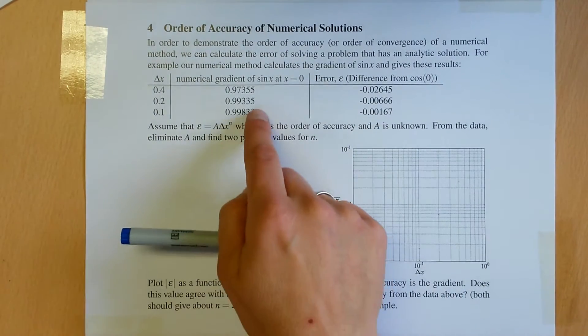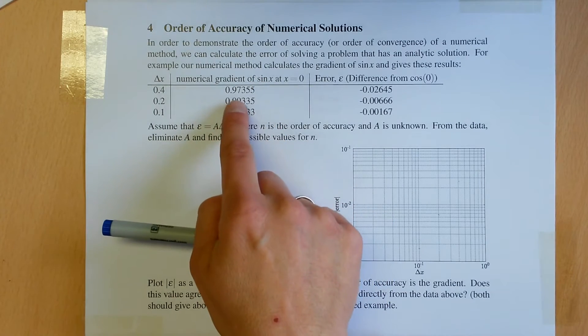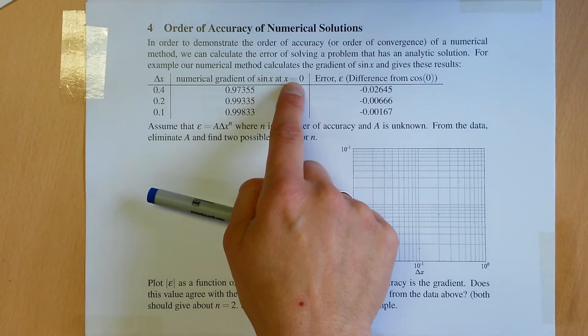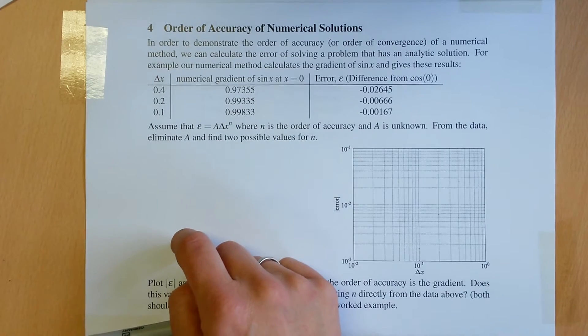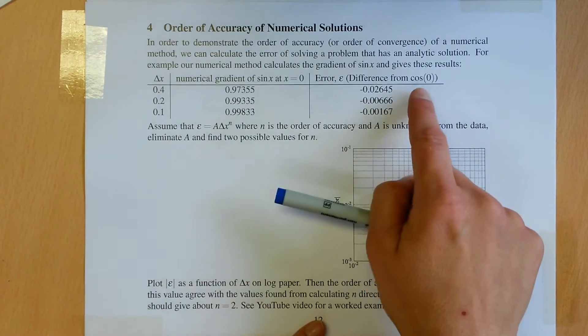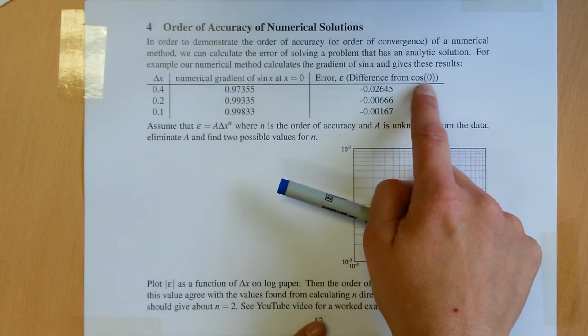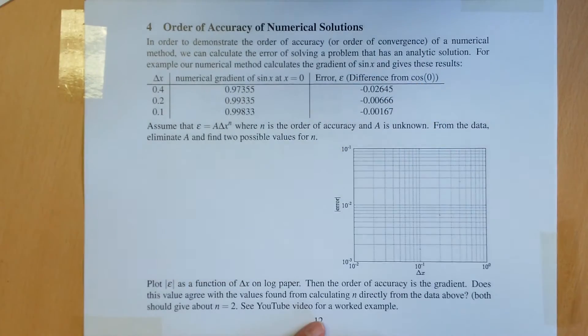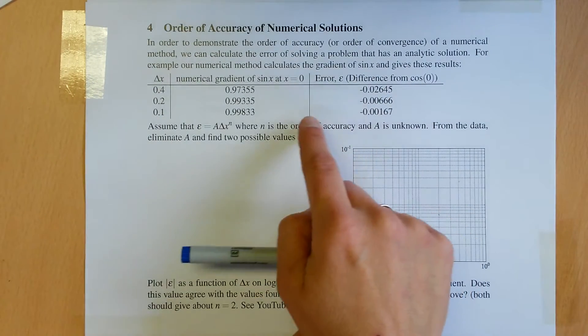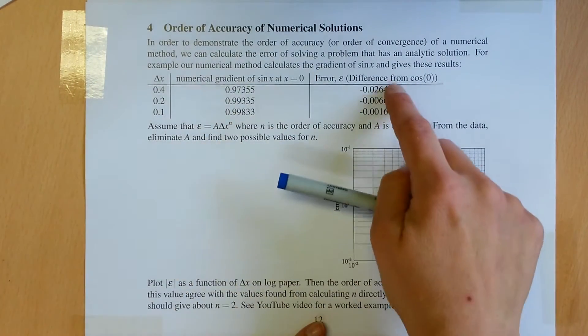We compare—the numerical method calculates the gradient of sine x at x equals 0 and gives these results. It should give 1; we know that the gradient of sine x is cos x and the cosine of 0 is 1, so there are some errors, these are the errors.